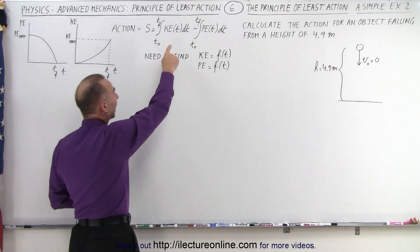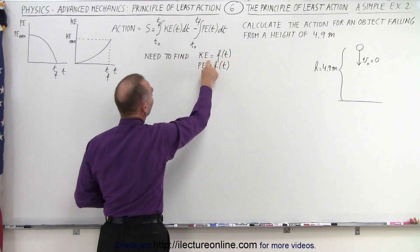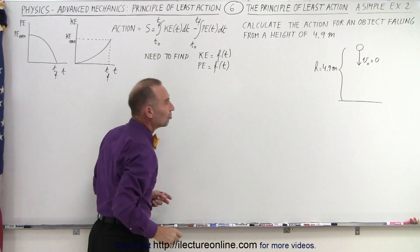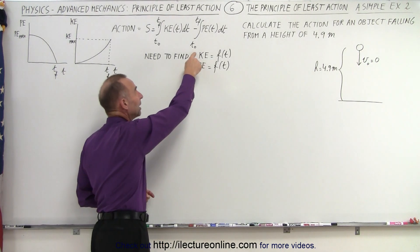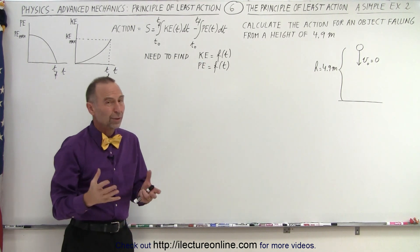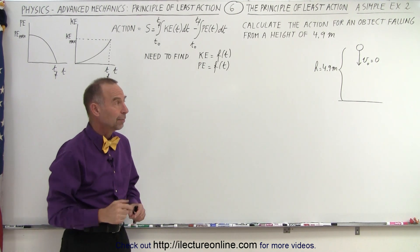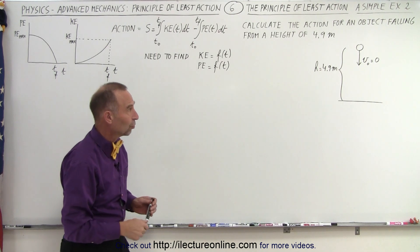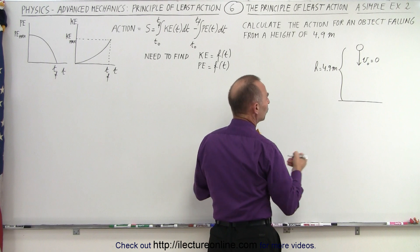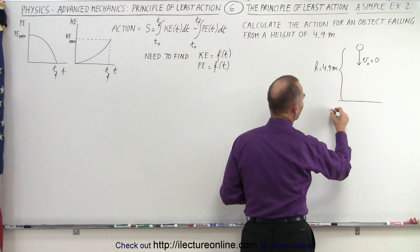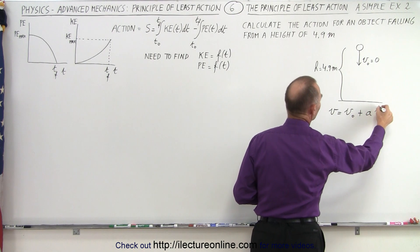To calculate the content inside the integrals, we need to find the kinetic energy and the potential energy as a function of time. Typically those are expressed as a function of velocity and as a function of height, so we need to find velocity as a function of time and height as a function of time for the situation where we drop a ball from a given height. Starting with the velocity, velocity equals initial velocity plus acceleration times time.